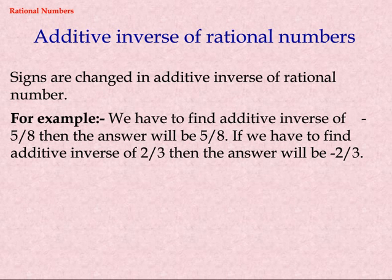Additive Inverse of Rational Numbers: Signs are changed in the additive inverse of a rational number. For example, the additive inverse of minus 5 eighths is 5 eighths. If we have to find the additive inverse of 2 thirds, the answer will be minus 2 thirds.